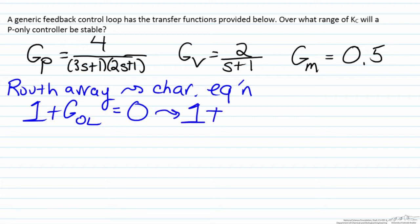In a generic feedback control loop like the one we are going to look at, this loop consists of the controller, the process, the valve, and the sensor transmitter, and this characteristic equation equals zero.